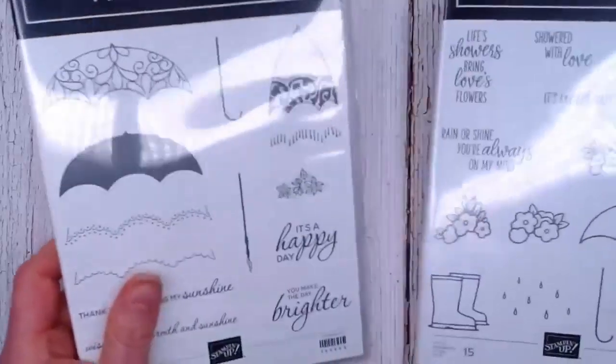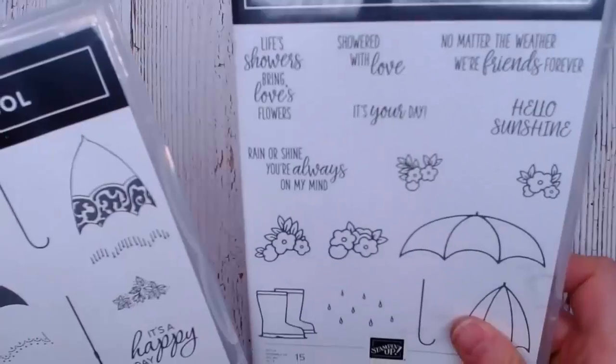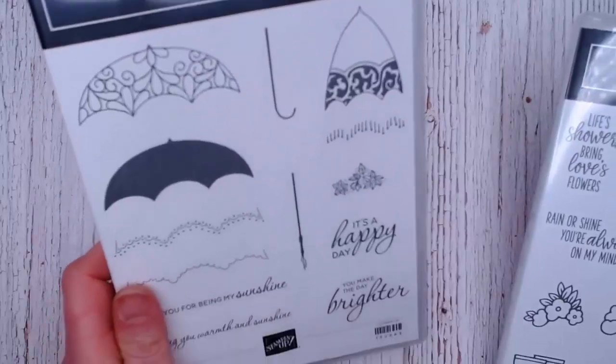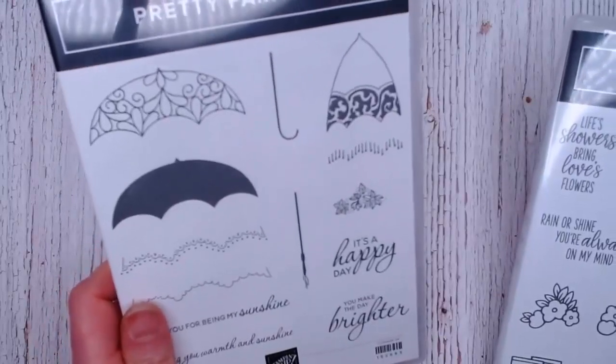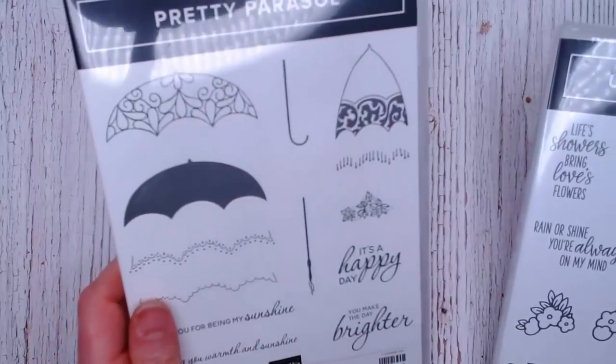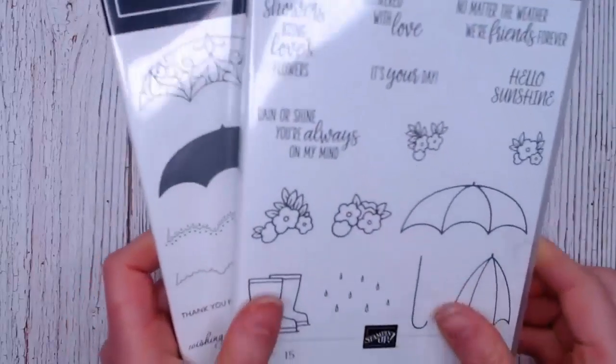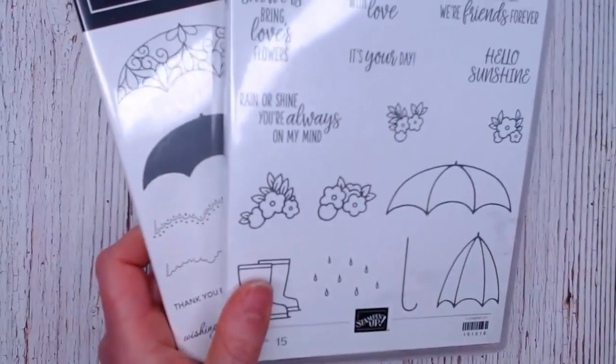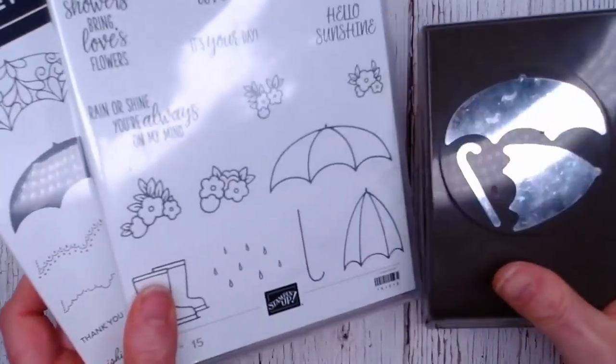Okay, so tonight we are going to use the Under My Umbrella and the Pretty Parasols stamp set. And I know my camera is really close to my desk tonight. I was having a bit of trouble with my lighting and this is the only way I could get it to work. And then we have the Umbrella Punch.